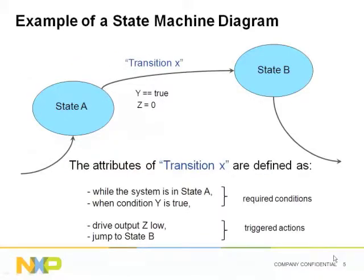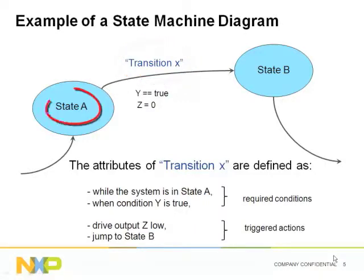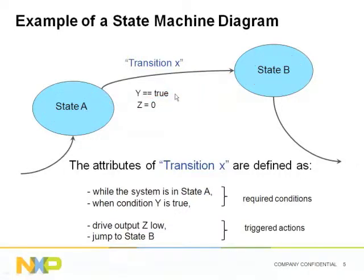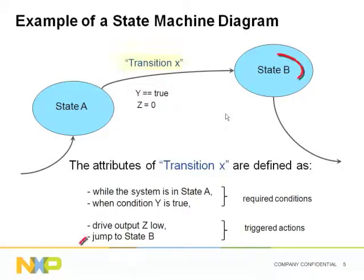Let's look now at an example. This diagram, which is part of a bigger flow chart, details a state machine transition. In this diagram we see a transition called X, which lets our state machine evolve from state A to state B. This transition is defined to happen only when the system is in state A and the condition, which we called Y, is true. When this transition happens, the output called Z gets cleared to the logic level 0.